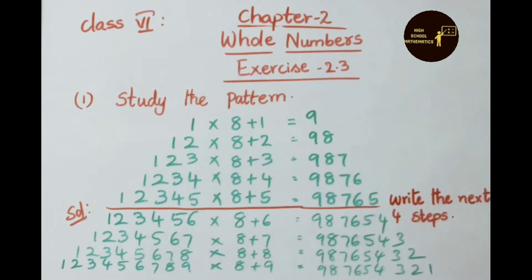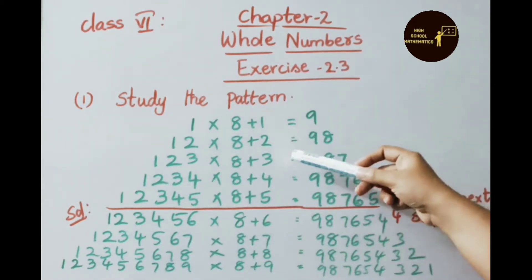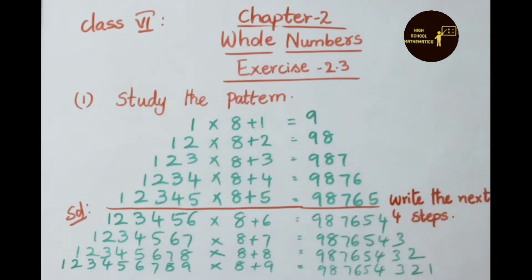So what they have done here - in each step they increased one value on the left side and here also they increase one value. So we have written the next four steps in this way: 1, 2, 3, 4, 5, 6, 7, 8. We increased one number on the left side.